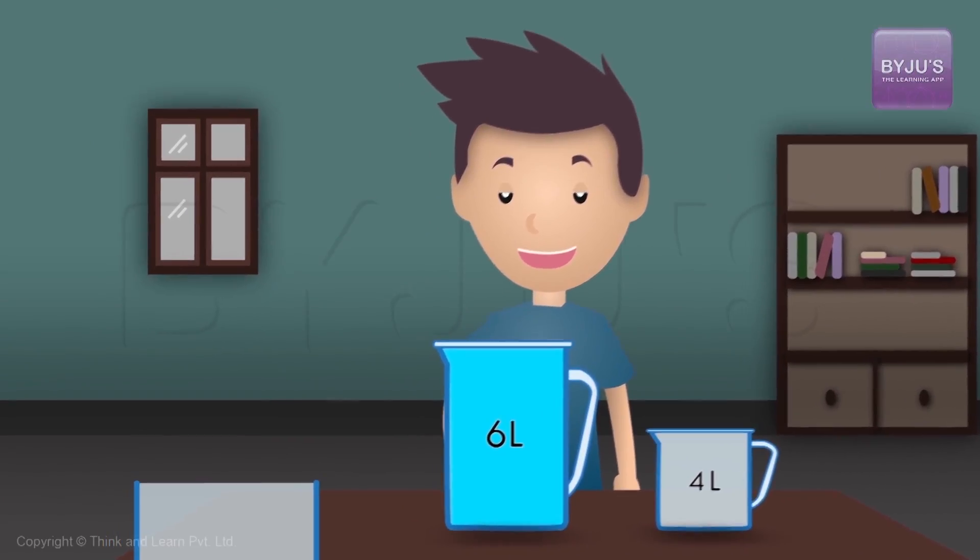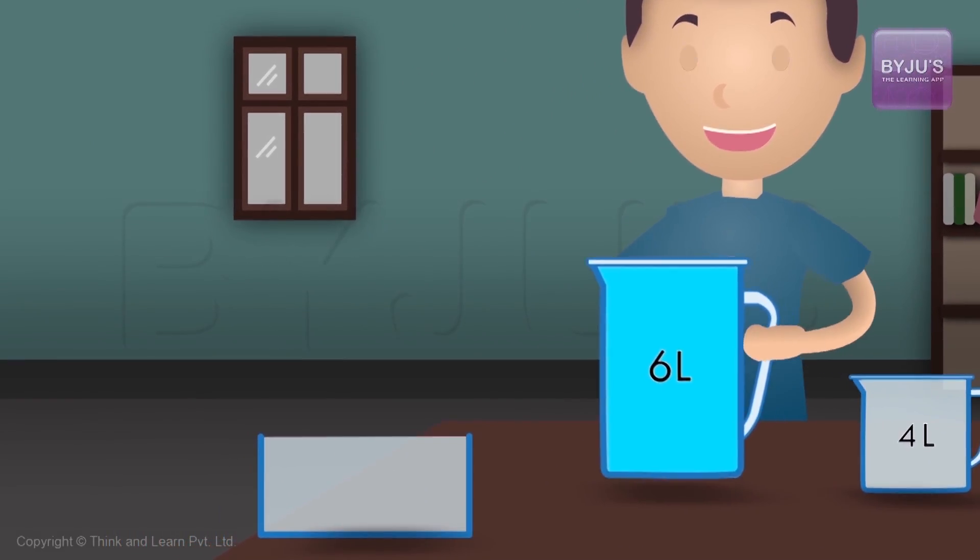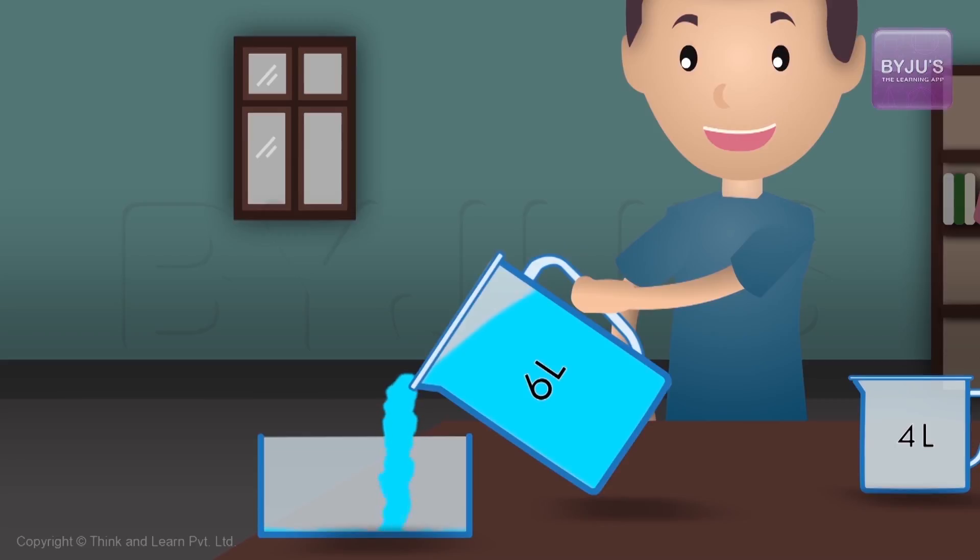Let's imagine the 6 liters jar from which I am draining out the water. The water starts draining out and the level of water starts making sharper angles with the wall of the jar.